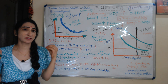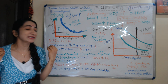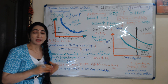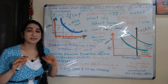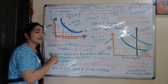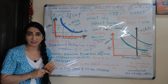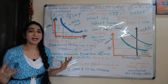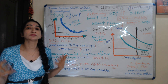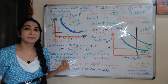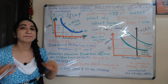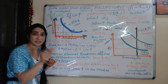This curve was very popular in the 1960s. But this curve failed — it broke down in 1970. Why did this curve fail in 1970? Because this curve was not able to explain stagflation.